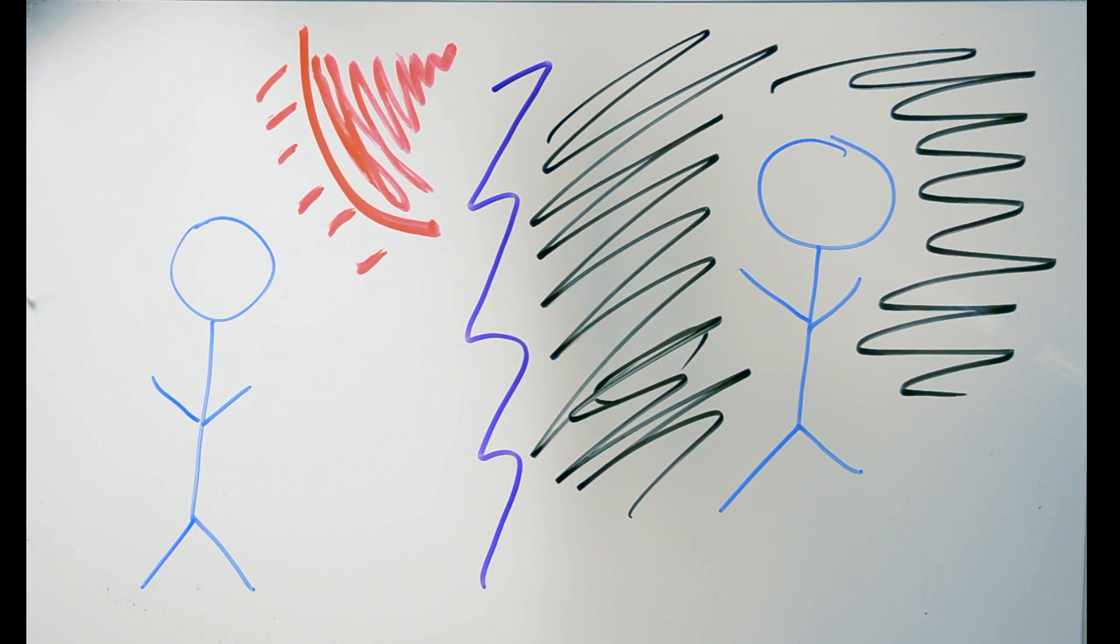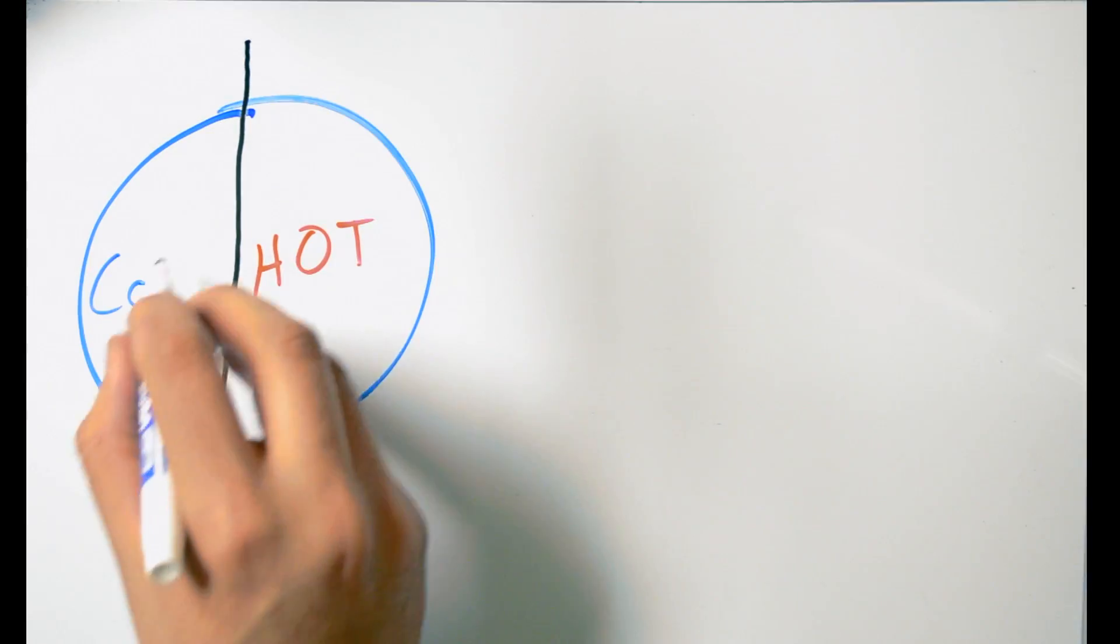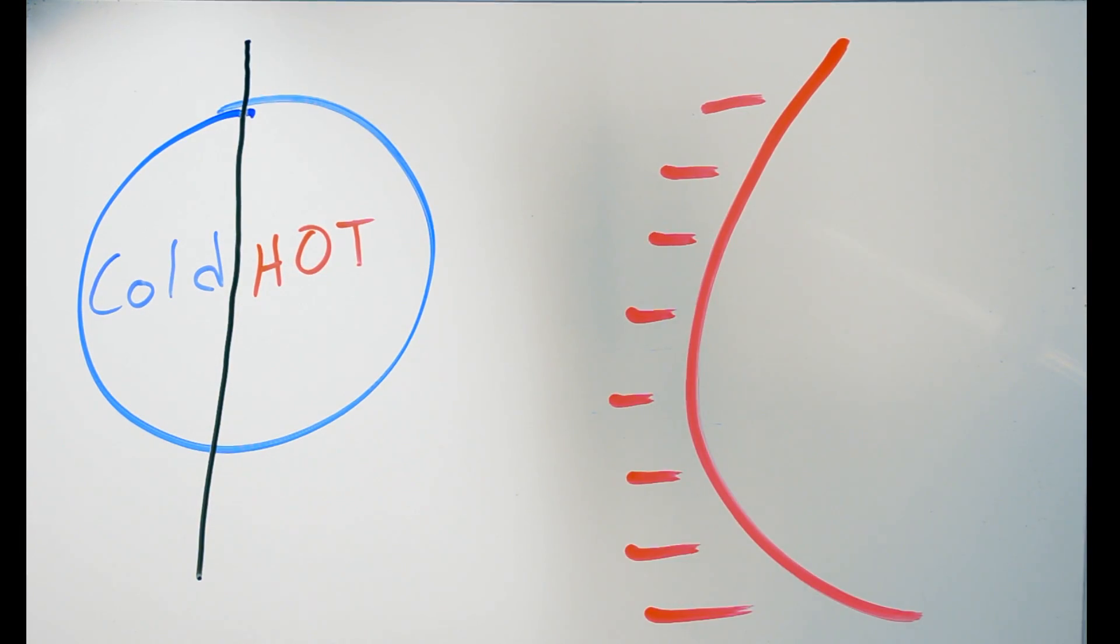This would drastically change the climates. During the daytime months, the side of the Earth exposed to the sun would become extremely hot, and the other side would become extremely cold.